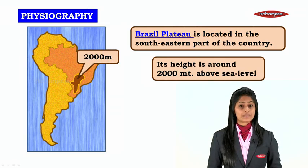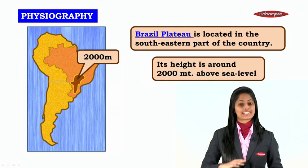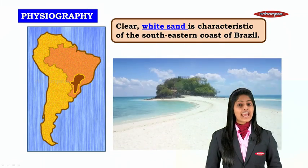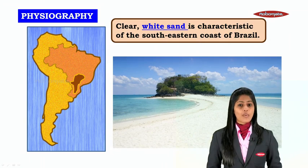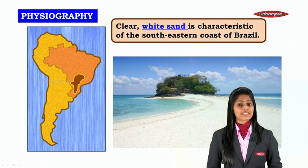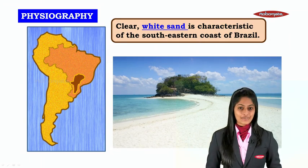The Brazilian Plateau is located in the southeastern part of the country and its height is around 2,000 meters above sea level. Clear white sand is a characteristic feature of the southeastern coast of Brazil.